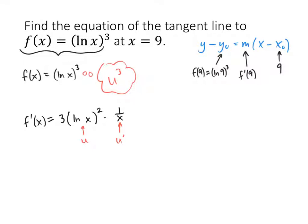So the slope of my tangent line, that's f prime of 9, which means everywhere I see an x in that derivative formula, I replace it with a 9. So that's 3 times natural log of 9 squared times 1 ninth. If I wanted to simplify that, that would be 1 third times the natural log of 9 squared.